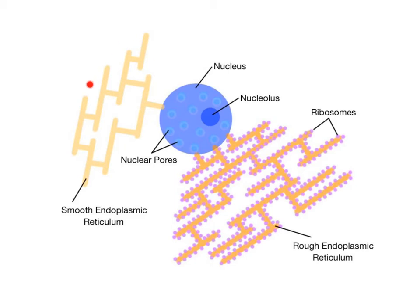The smooth ER lacks ribosomes and functions in lipid and carbohydrate synthesis. Think of lipids like oils and membrane phospholipids having a smooth consistency to help you remember this biosynthesis function of the smooth ER.